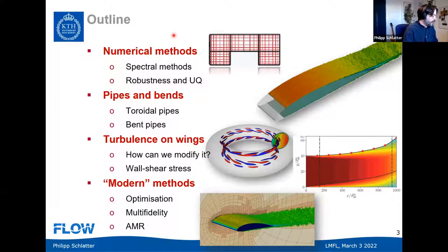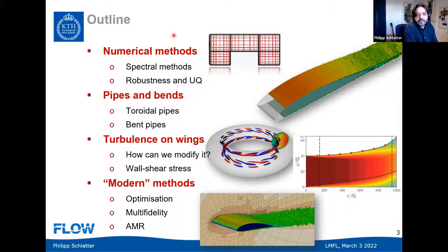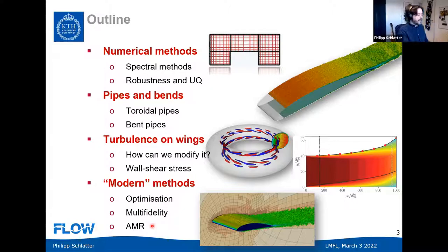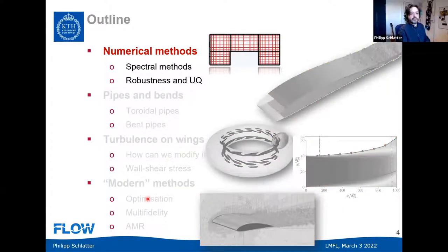What I'm going to talk about is divided into four main topics. First, I'd like to motivate what we're doing and what types of methods we're using. Then I'll look at transitional flows using the example of pipe flow and bent pipe flow. Then we'll look at wall-bounded turbulence — specifically control and wall shear stress determination — and at the end, depending on time, some modern numerical methods.